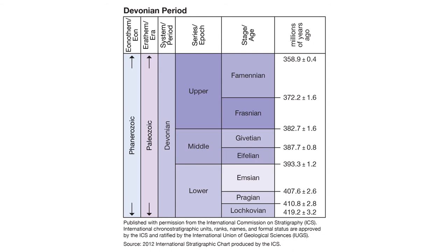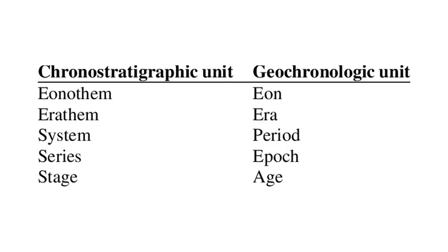When groups and supergroups can be correlated across the globe, they are organized into larger chronostratigraphic units, or bodies of rock representing intervals of time in the past. Groups and supergroups make up globally recognizable stages, which are hierarchically organized into series, systems, erythems, and ionothems. Chronostratigraphic units correspond to geochronological units, or time intervals. Whereas the chronostratigraphic units are bodies of rock that exist today, geochronological units are time intervals that transpired in the past. The geochronological units include, from smallest to largest: ages, epochs, periods, eras, and eons.